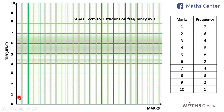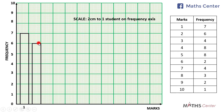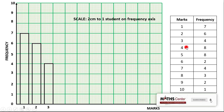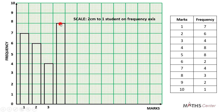For the first bar, I'll leave three small boxes and then the bar occupies seven small boxes. That is for mark one and the frequency is seven, so the height of the bar will be at seven. We move on to the next one, which is mark two. We leave three small boxes, the bar occupies seven small boxes, and the height will be at six. For mark four, the frequency is eight so the height will be at eight.